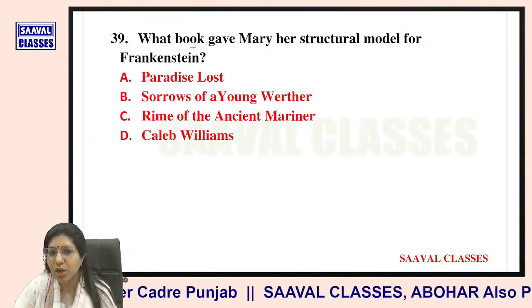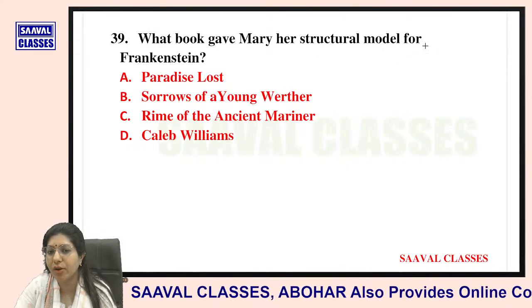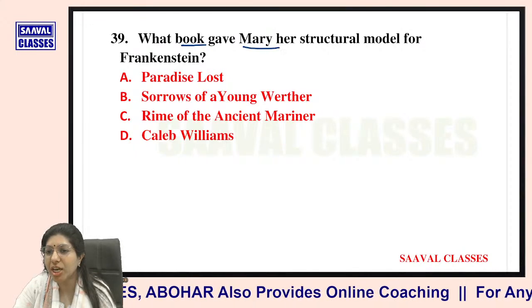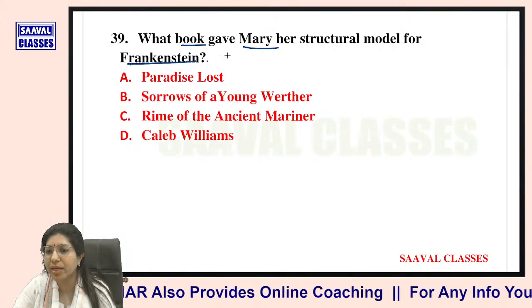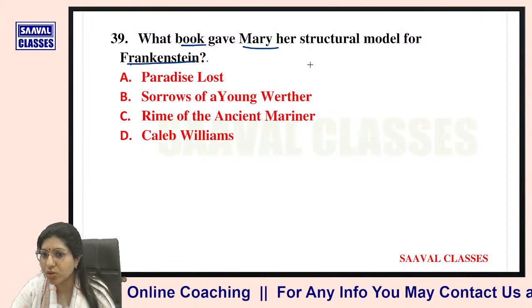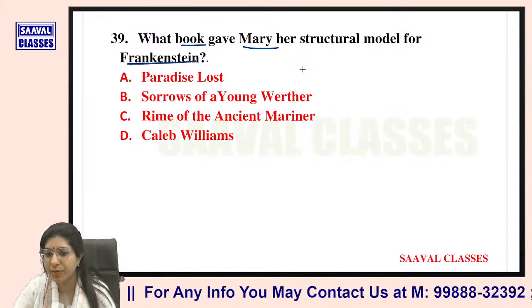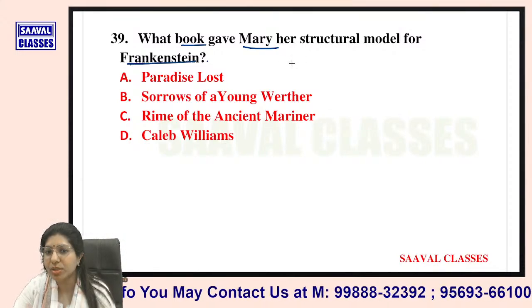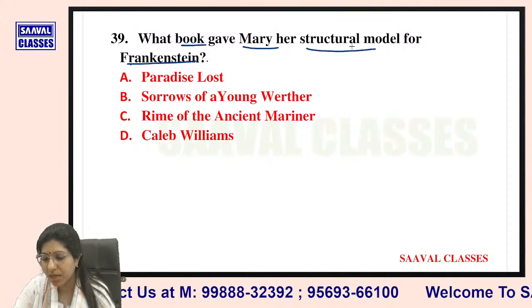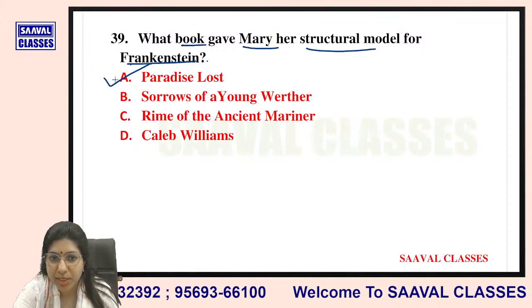Question number thirty-nine: What book gave Mary Shelley her structural model for Frankenstein? Options are Paradise Lost, Sorrows of a Young Brother, Rime of the Ancient Mariner, or Caleb Williams. It was from Paradise Lost — very right.